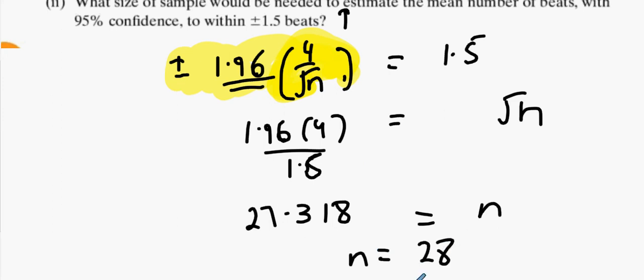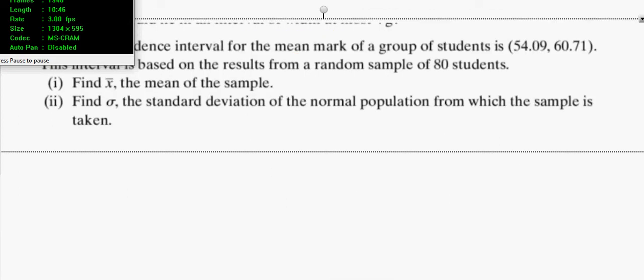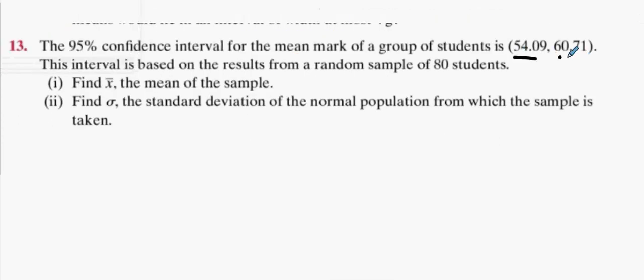Question 13. The mean is the average of both results. So you add 54.09 to 60.71 and then you divide it by 2, and that will give you your mean of 57.4.